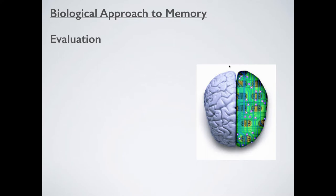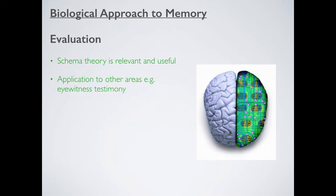This is the evaluation for the cognitive approach. In terms of positives, the schema theory is relevant and seems to be quite useful. Humans don't normally have an idea of shelves in their mind that they go to and select a memory from — rather, they link up ideas in terms of context and meaning, as we know from previous research. So it seems relevant and useful. Another positive is that this has a huge application to other areas, for example eyewitness testimony. A later video on Loftus and Palmer's experiment will show how schema might influence how we've viewed very important scenarios.